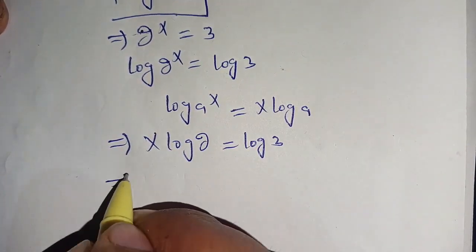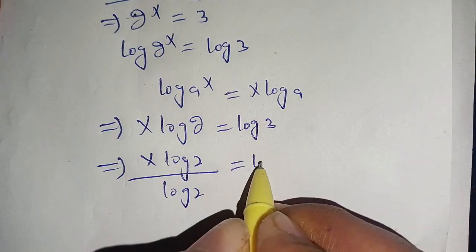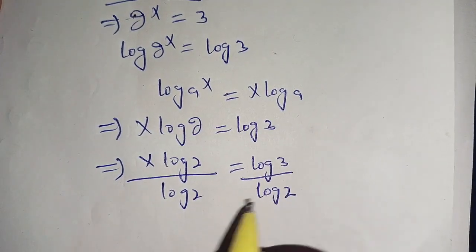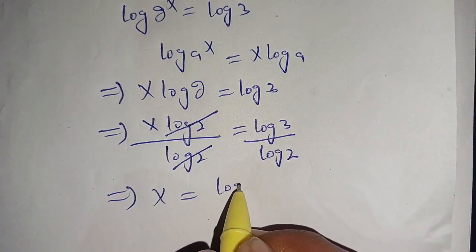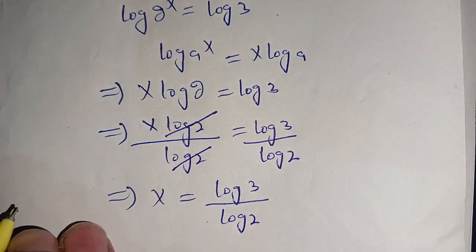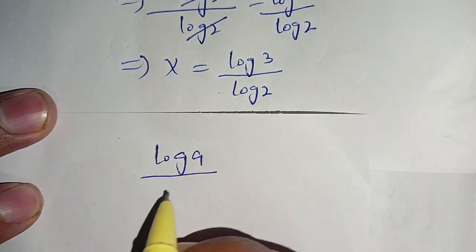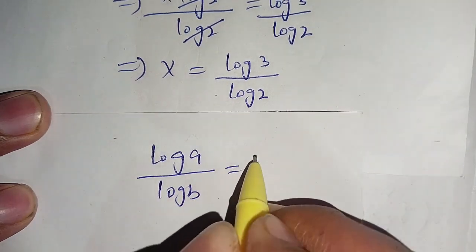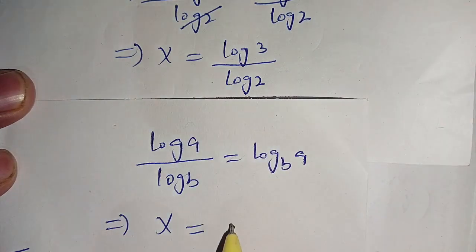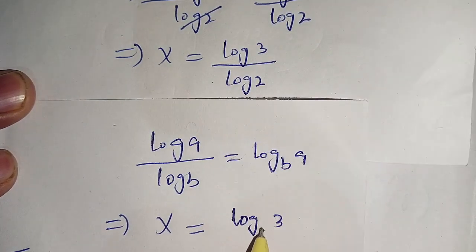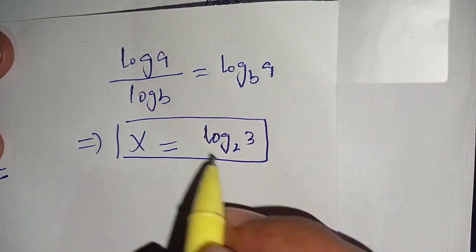Dividing both sides by log 2 gives x times log 2 divided by log 2 equals log 3 divided by log 2. We cancel log 2, which implies x equals log 3 divided by log 2. Using the logarithm change-of-base property, log a divided by log b equals log of a with base b, so x equals log base 2 of 3. This is the required value of x which satisfies the given equation.